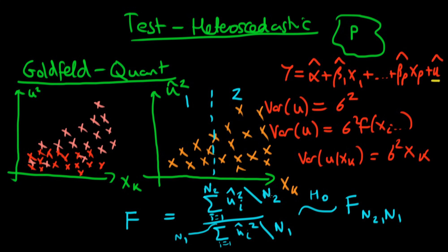The reason the Goldfeld-Quandt test is appealing — even though it's not particularly powerful and only tests for heteroskedasticity along one variable — is that it's a nice graphical test. We could essentially perform the test without calculating the statistic at all: by taking the estimated residuals, ordering them along xk, and squaring them. If there is any systematic pattern — increasing, decreasing, or non-linear — that's a sign of heteroskedasticity. In general, it's always better to use plots alongside statistics.